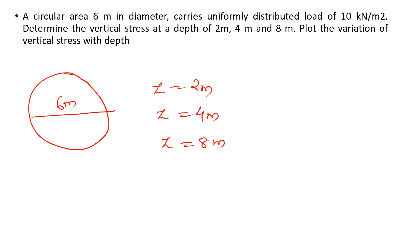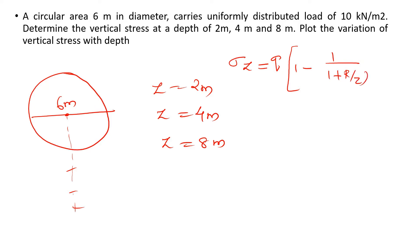We are going to study the vertical stress using the equation: σz = q × [1 − 1/(1 + (r/z)²)^(3/2)]. This is the equation we derived in the last class.